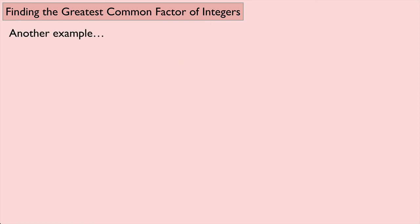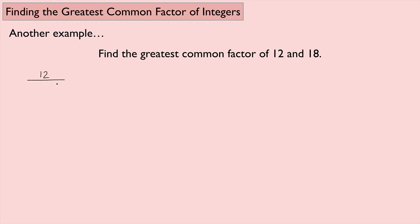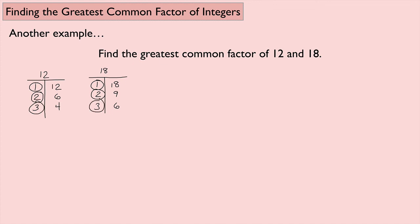Let's look at one more example: find the greatest common factor of 12 and 18, using both methods. For the factor pairs of 12: 1 and 12, 2 and 6, 3 and 4 — then next would be 4, which I already have, so I'm done. For 18: 1 and 18, 2 and 9, 3 and 6 — 4 and 5 don't work, and then we're back to 6, so we're done. The common factors are 1, 2, 3, and 6. The greatest one is 6, so the GCF of 12 and 18 is 6.